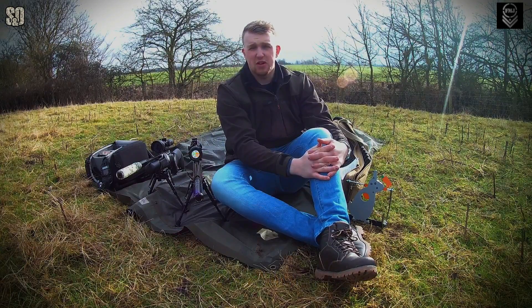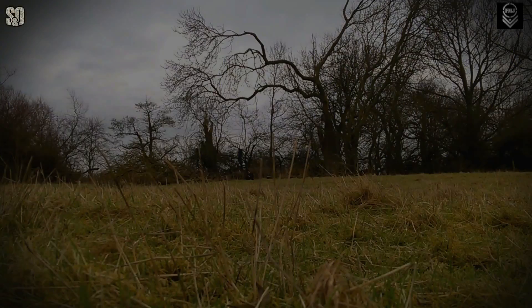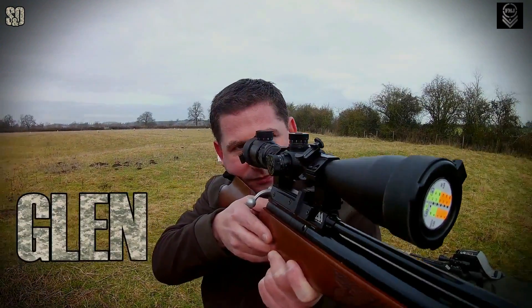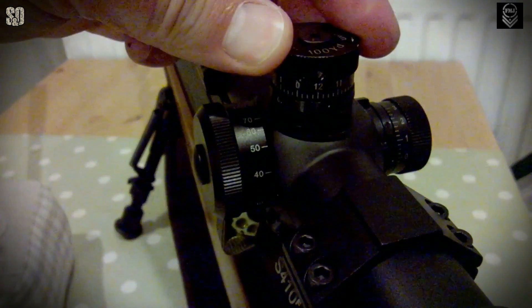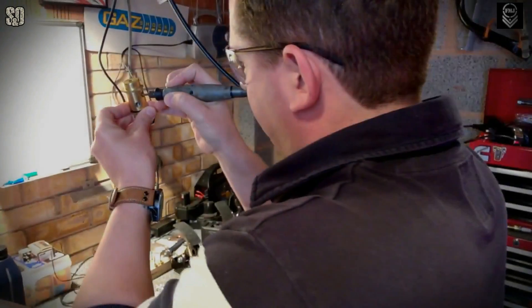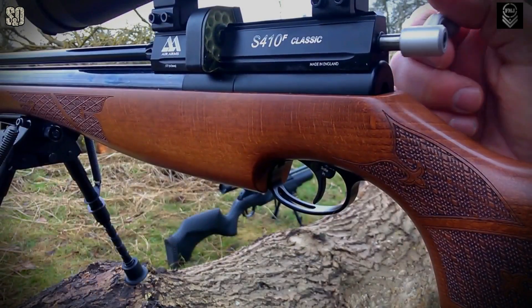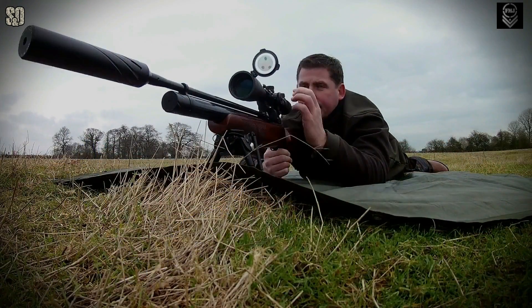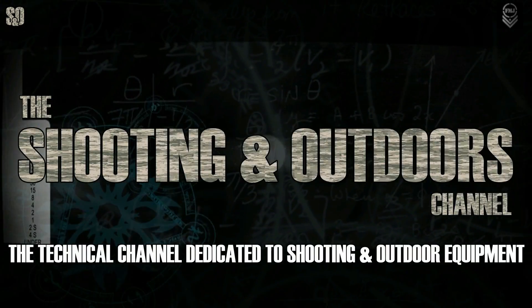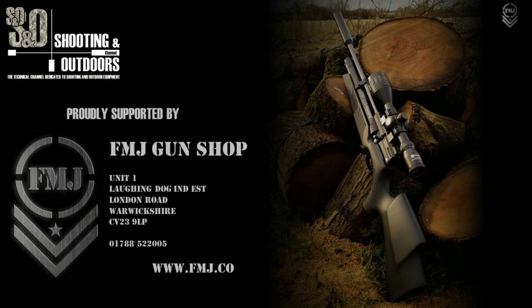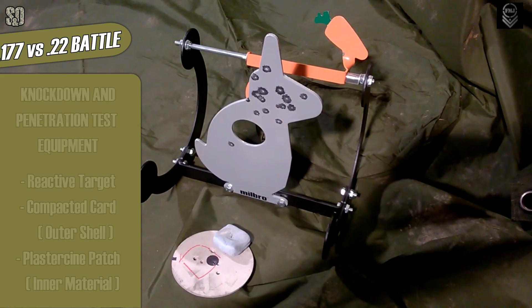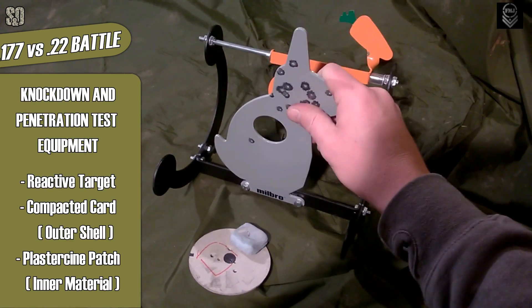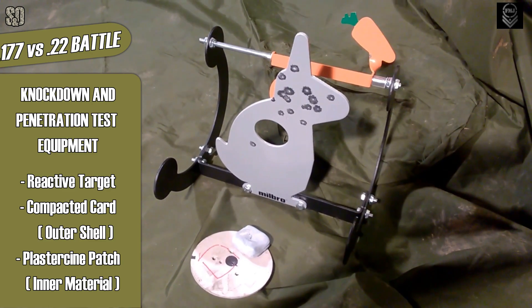Today's experiment will be looking at knockdown and penetration. Today's experiment is an easy one and kills two birds with one shot. We'll be putting this wobbly rabbit out at 20 yard intervals with a 1 inch deep plasticine impact patch fixed to its head.